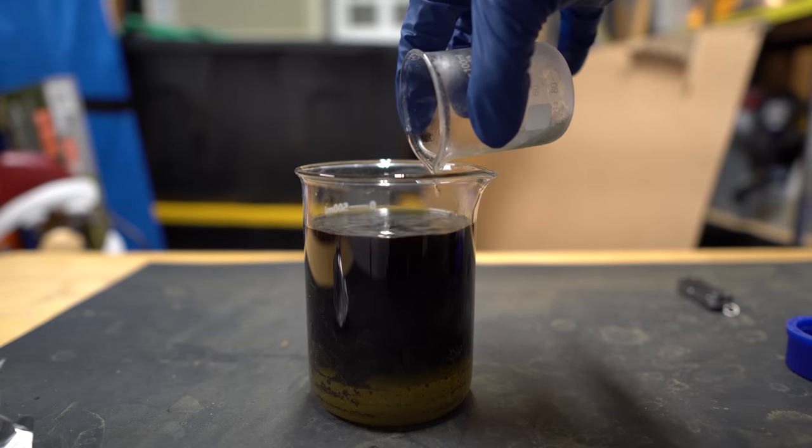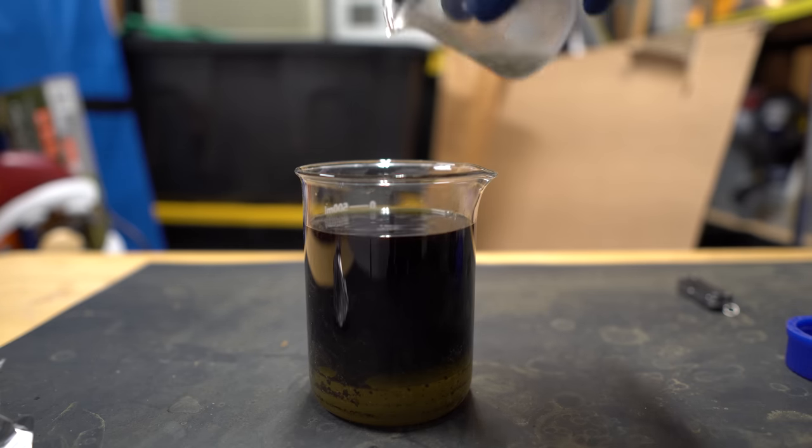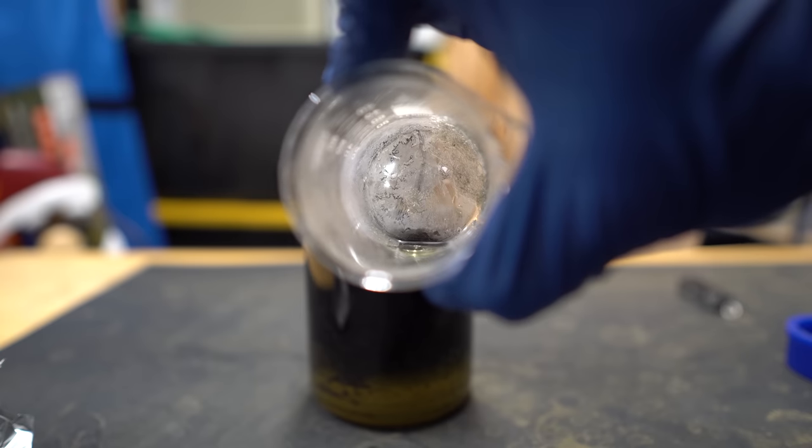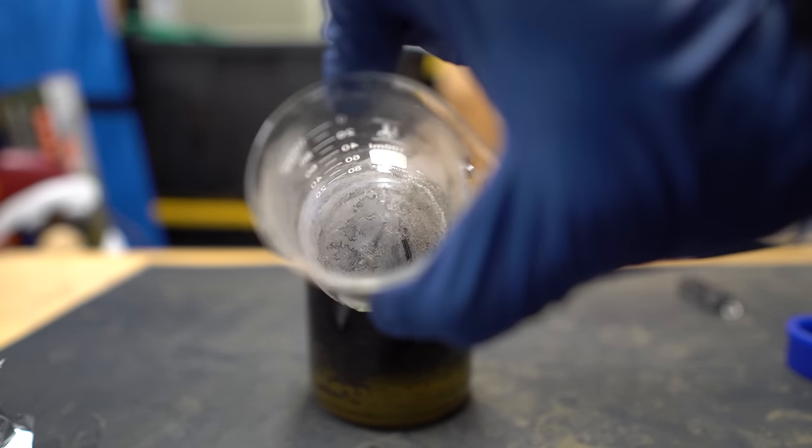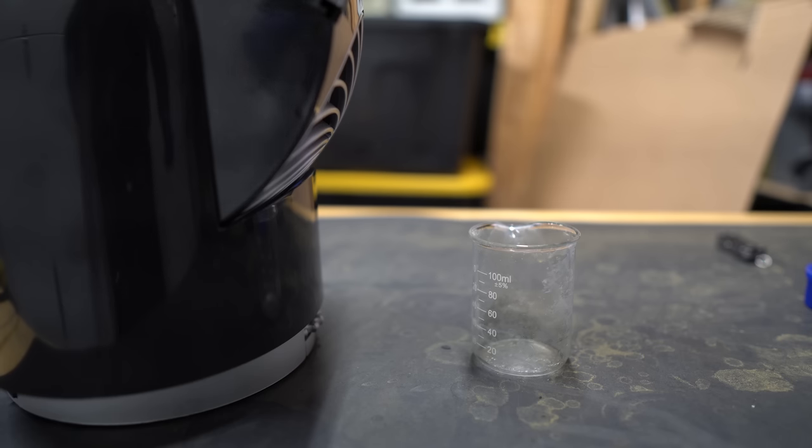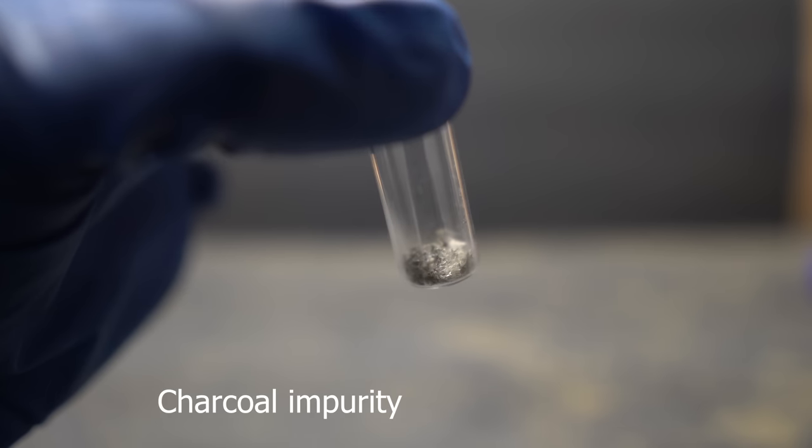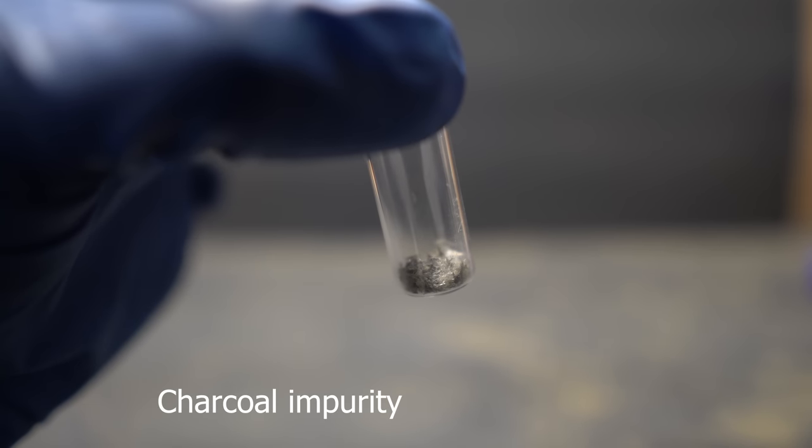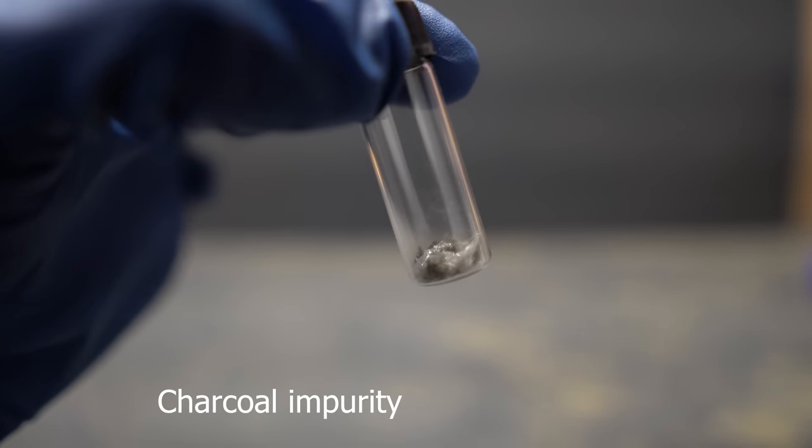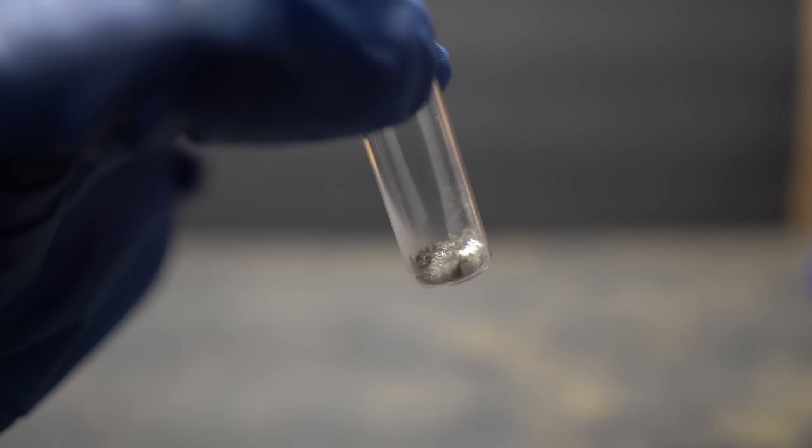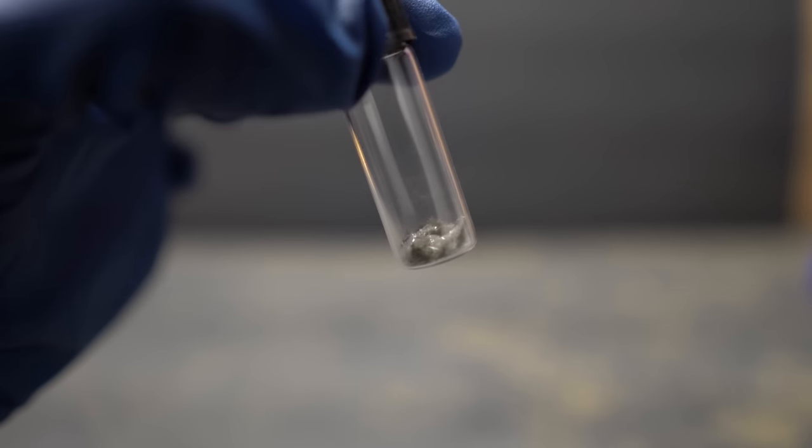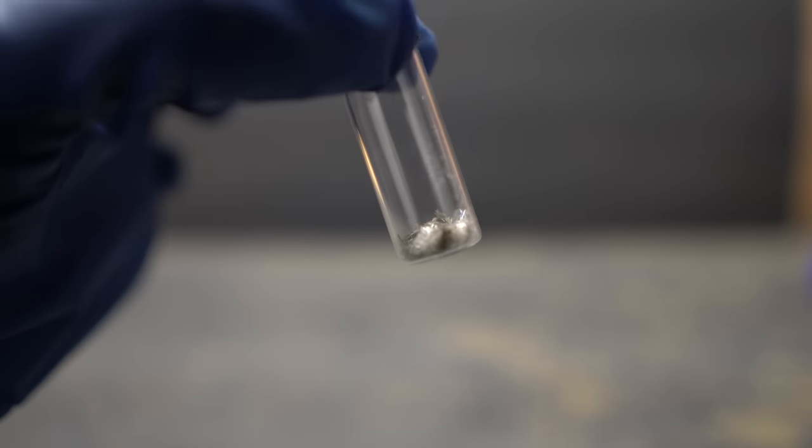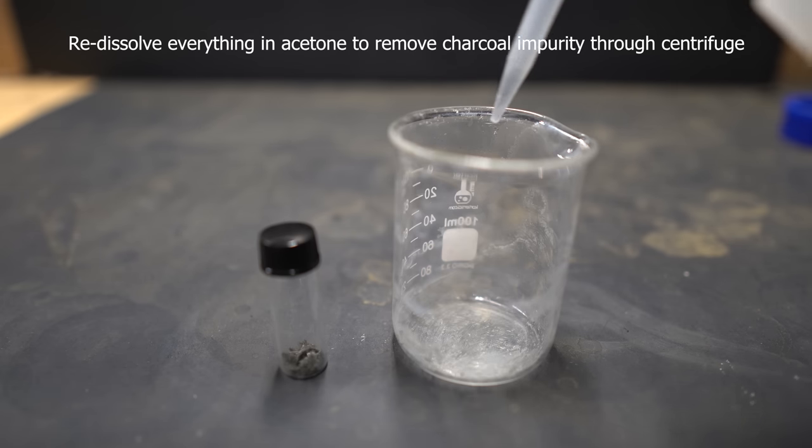The problem that I had with my recrystallization was there was some slight activated charcoal impurities in there. These latched onto the crystals during the recrystallization process and it made my crystals look black. I was extremely excited when I saw the crystals in the solution because I couldn't see the charcoal. When I dried everything and put it into this vial, you can really see the charcoal impurities. Apparently the centrifuge did not get it at all.